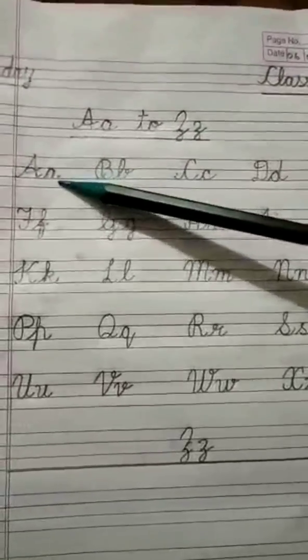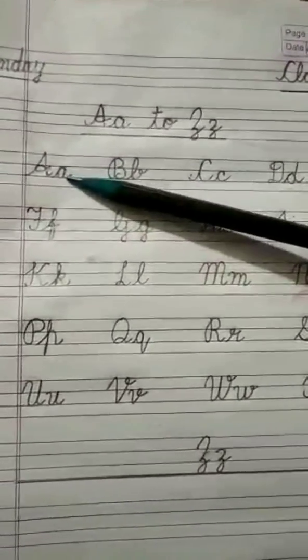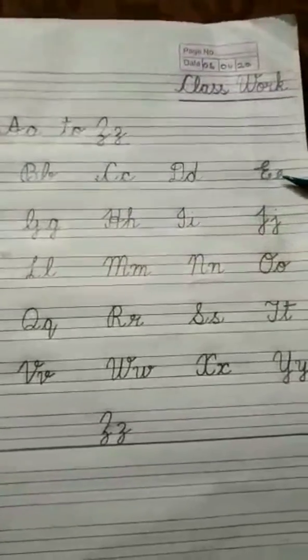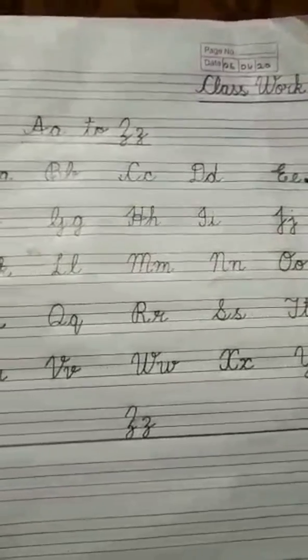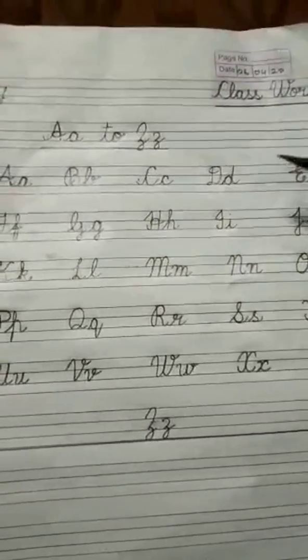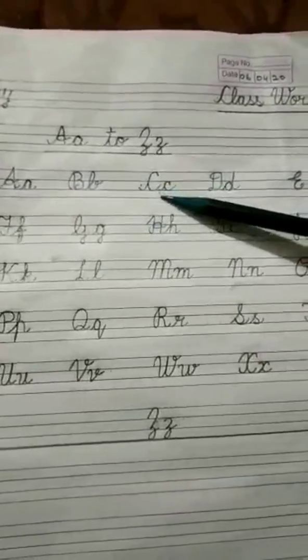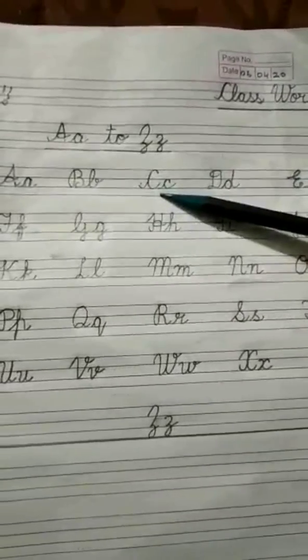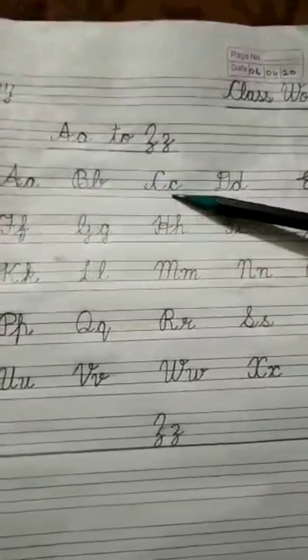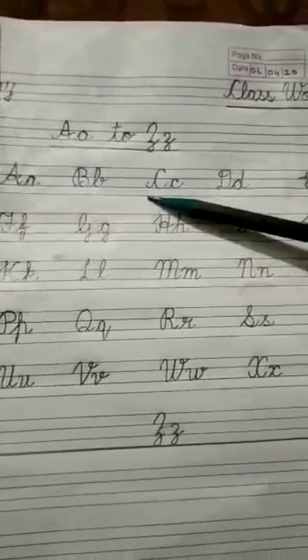We start with capital A and small a. We write it at one end near the margin. And then we write capital E and small e at the other end of the line. In the center of A and E, we write capital C and small c. Now between capital A and C, we write B. In this way, you will get the spacing right.